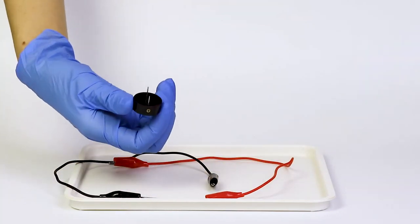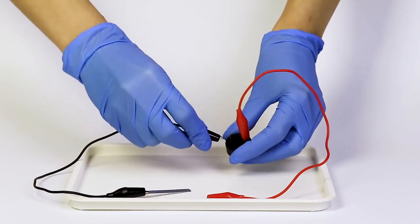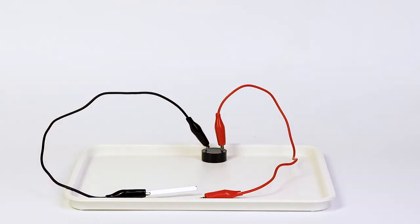Now, connect the free ends of the wires to the buzzer, the red wire to the positive pole and the black wire to the negative pole.